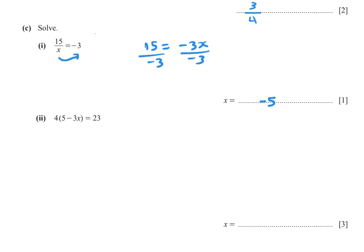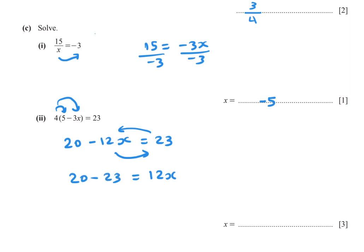Part (d)(i): Solve 4(5 minus 3x) equals 23. Expand: 4 times 5 equals 20, 4 times negative 3x equals negative 12x. So 20 minus 12x equals 23. Transposing: 12x equals 20 minus 23 equals negative 3. Divide by 12: x equals negative 3 over 12, or negative 1 over 4 in simplest form.